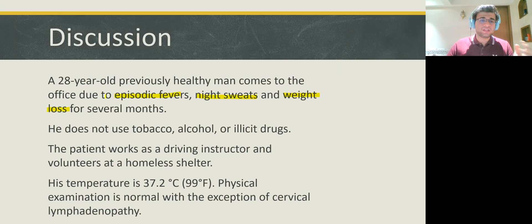These are present in about 40% of the patients. On examination, we find that our patient has cervical lymphadenopathy. Cervical lymphadenopathy is the most common type of lymphadenopathy seen in patients with Hodgkin's lymphoma.